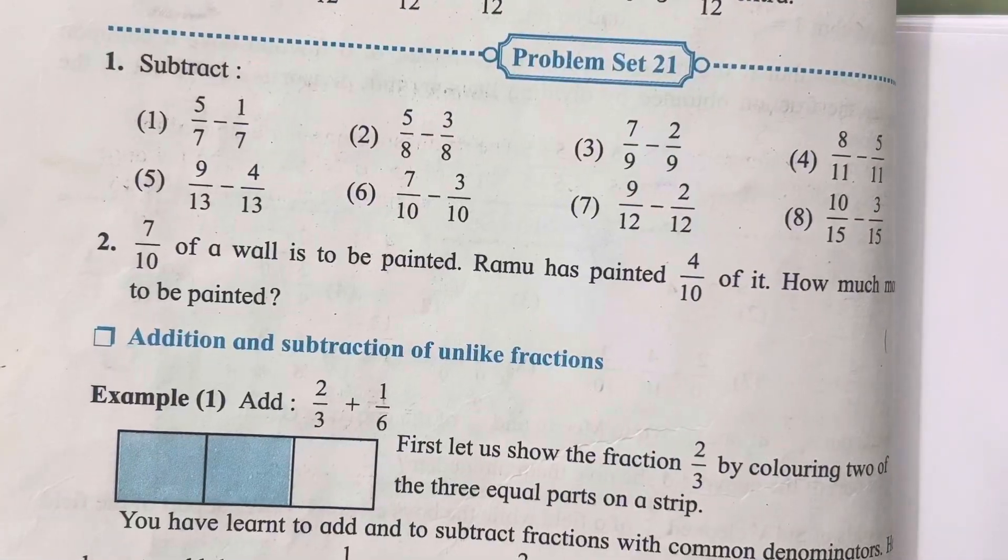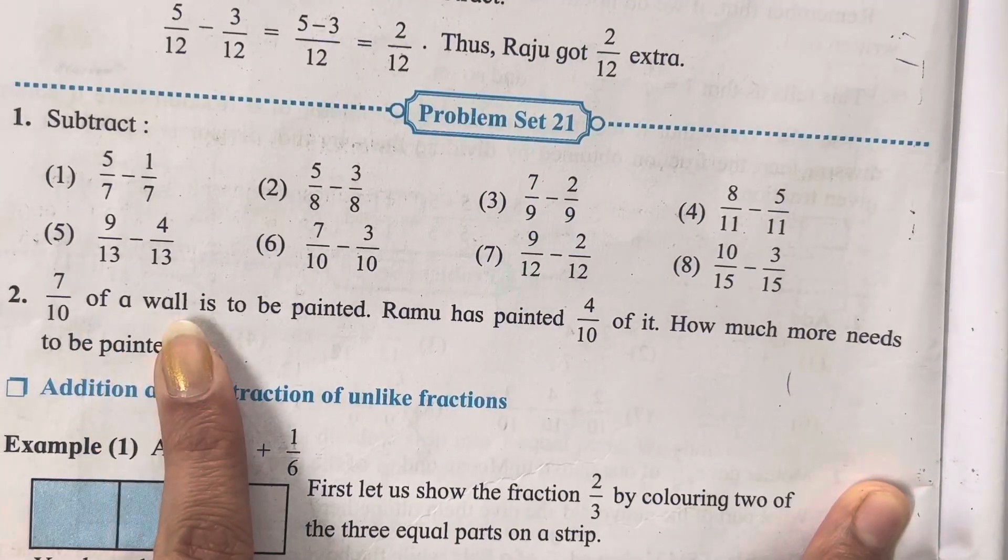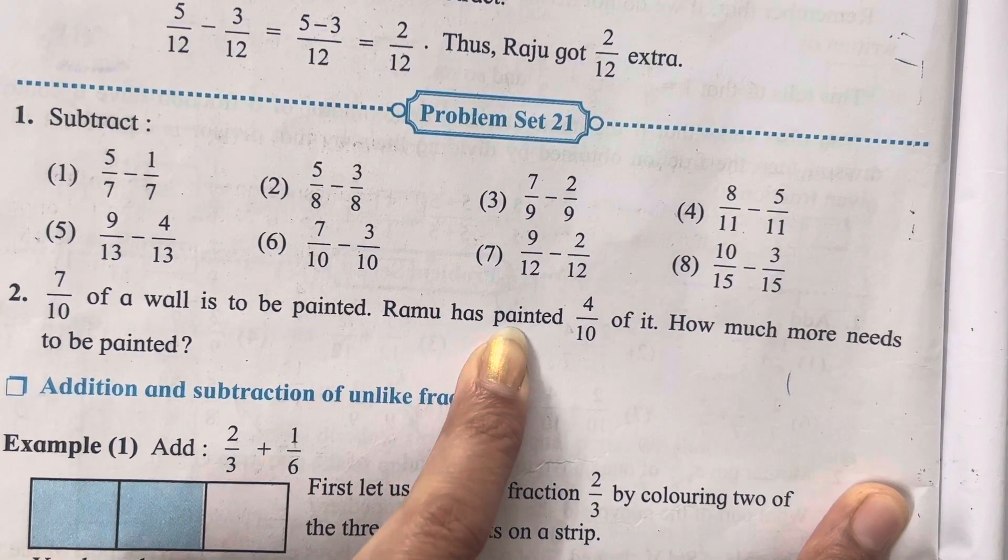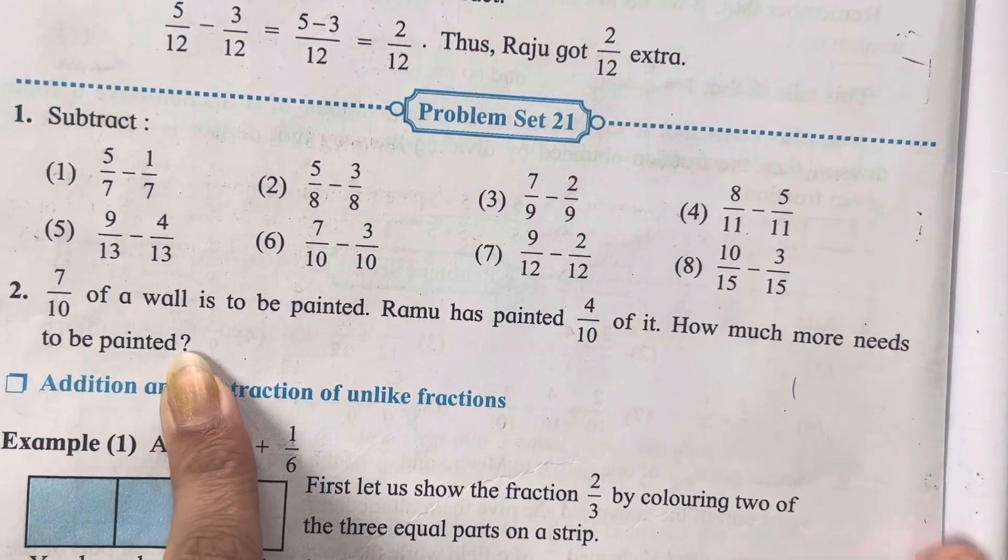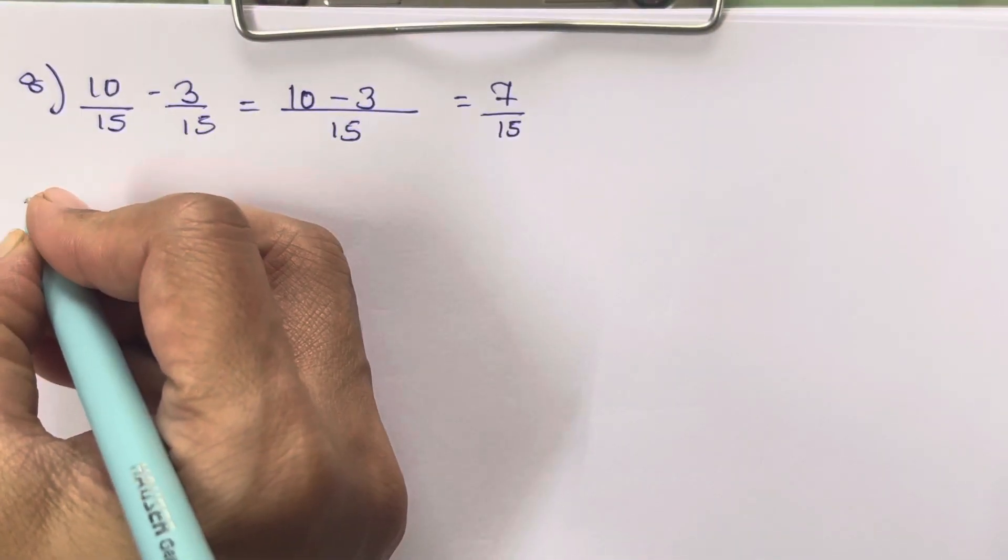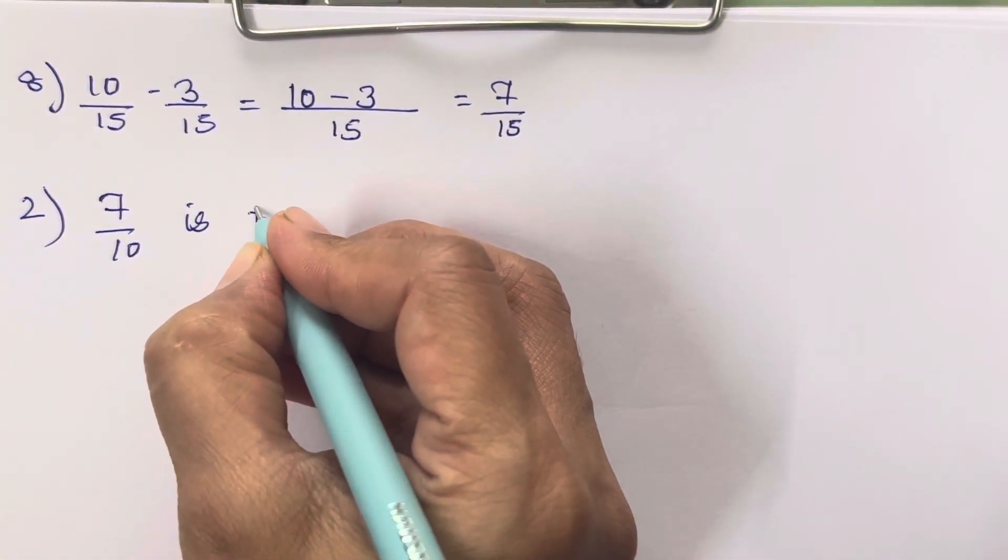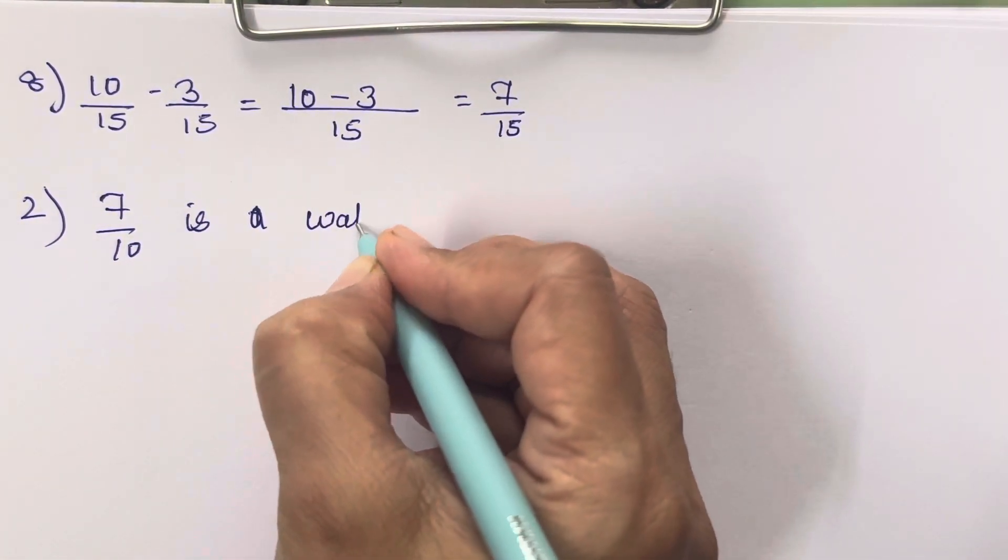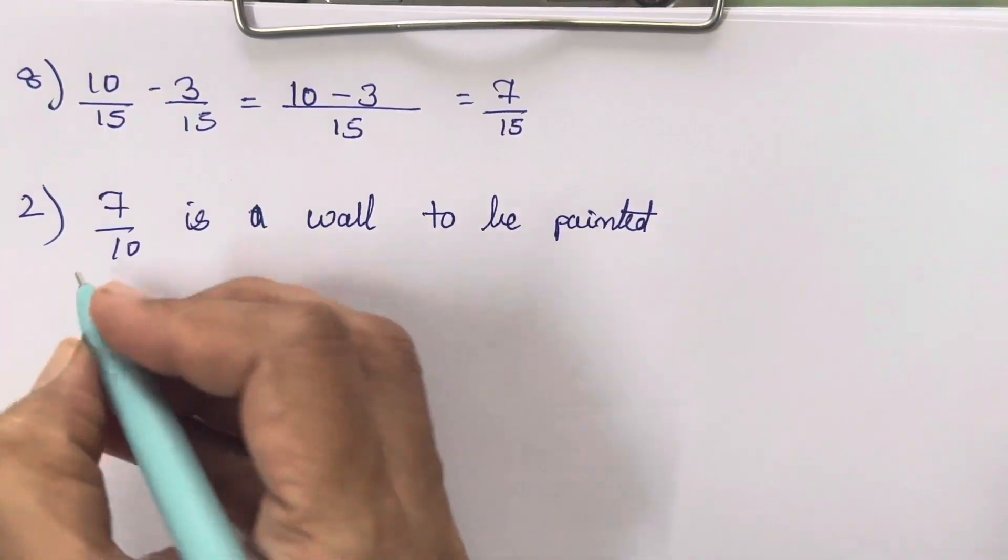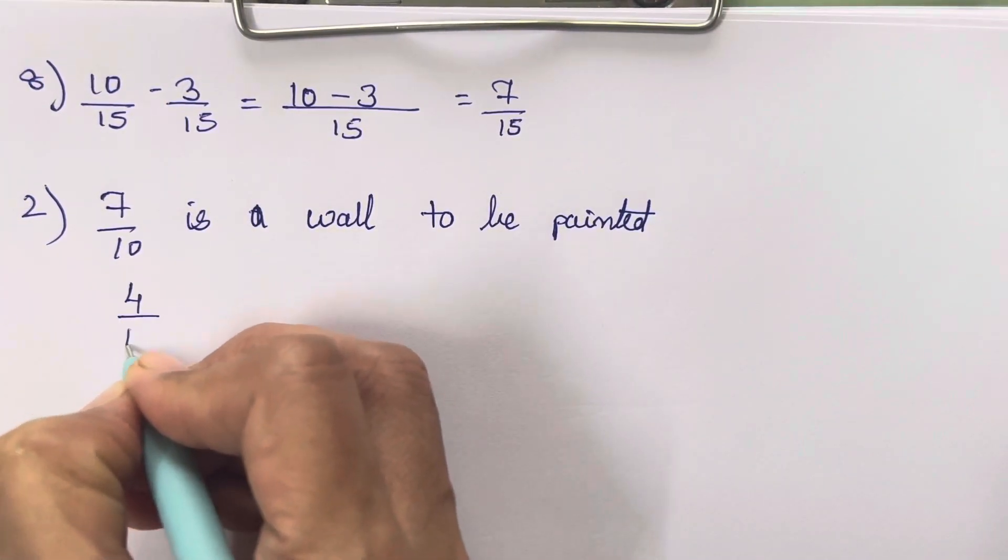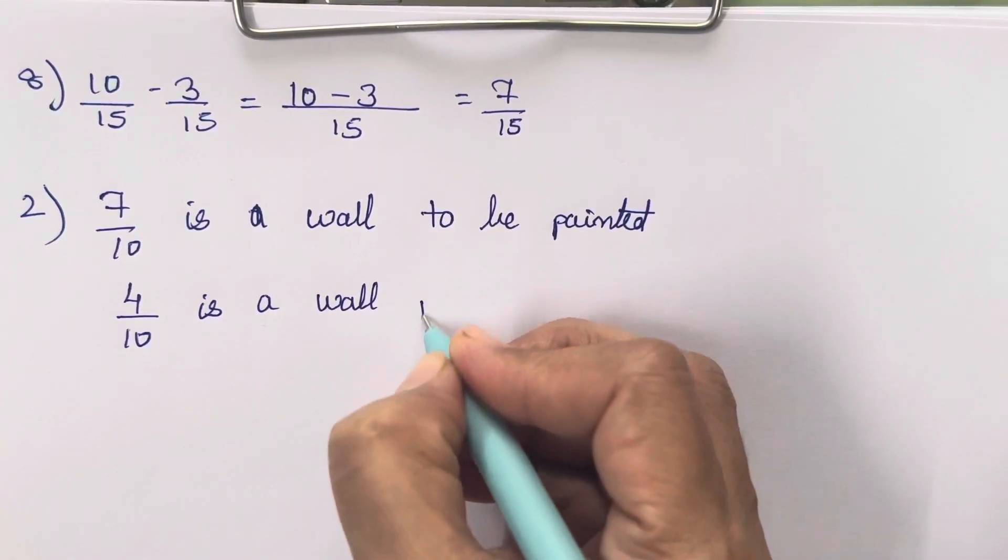That is, 7 upon 10 of a wall is to be painted. Ramu painted 4 upon 10 of it. How much more needs to be painted? Okay, so first we will write down whatever is being given: that 7 upon 10 is a wall to be painted, 7 upon 10 is a wall to be painted, and 4 upon 10 is a wall painted.